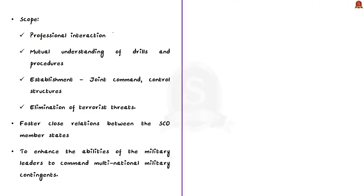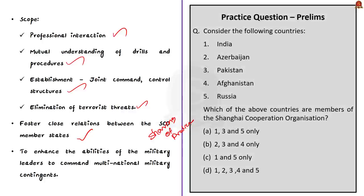The scope of Exercise Peaceful Mission includes professional interaction, mutual understanding of drills and procedures, establishment of joint command and control structures, and elimination of terrorist threats. The aim is to foster close relations between SCO member states and enhance the ability of military leaders to command multinational military contingents. The exercise enables sharing of best practices between the armed forces of SCO nations.